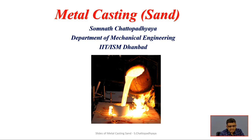In a typical sand casting, molten metal is poured into the sand mold in a liquid state. It is put into the sprue, and from the sprue it goes to the channel called the runner. Then it enters into the mold cavities where it will be properly filled and then solidified. The mold is made of sand, and the advantage of sand is that it can retain its shape at elevated temperature.